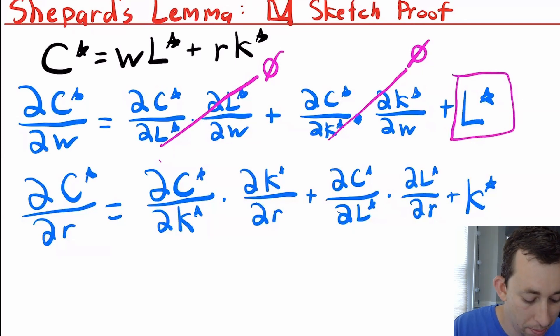We can do the same thing if we take DC star or the derivative of the optimal cost function with respect to R, the rental rate, the price of capital. We're going to get a similar thing here.